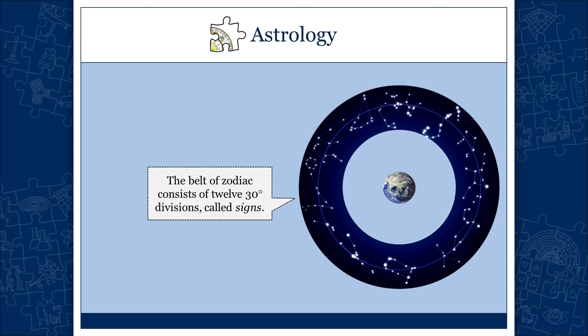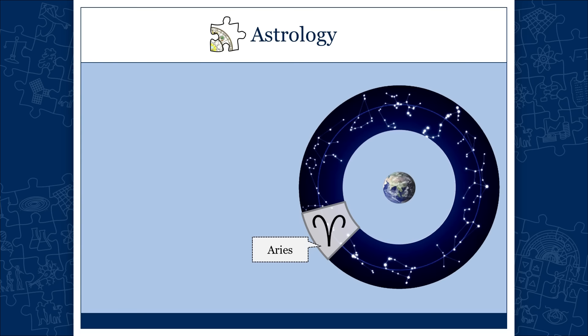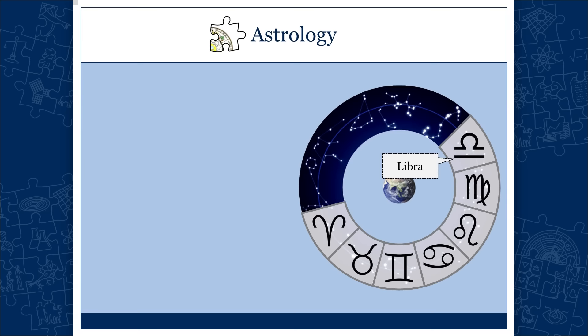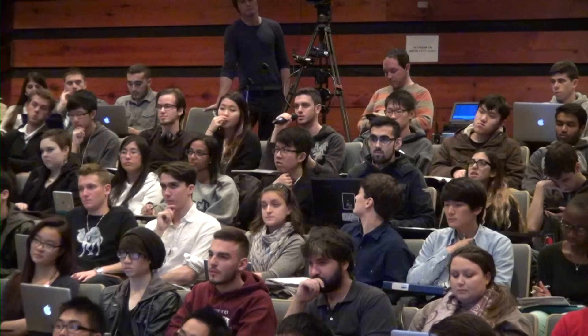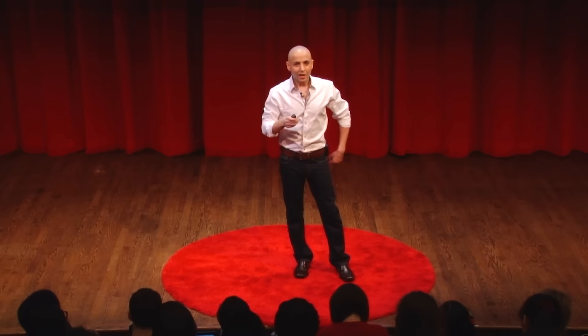The belt of the zodiac consists of 12 thirty-degree divisions called signs: Aries, Taurus, Gemini, Cancer, Leo, Virgo, Libra, Scorpio, Sagittarius, Capricorn, Aquarius, and Pisces. Why exactly 12? Student David: lunar cycles. Correct — a lunar month is roughly 29.5 days, so there are roughly 12 lunar months in a year, and they took 12 as the number. Why 360 degrees? This comes from ancient Babylon, the Babylonian system of mathematics — a combination of base 10 and base 60. Base 60 is divisible by 2, 3, 4, 5, 6, 10, 12, 15, 20, and 30 — making division extremely convenient.